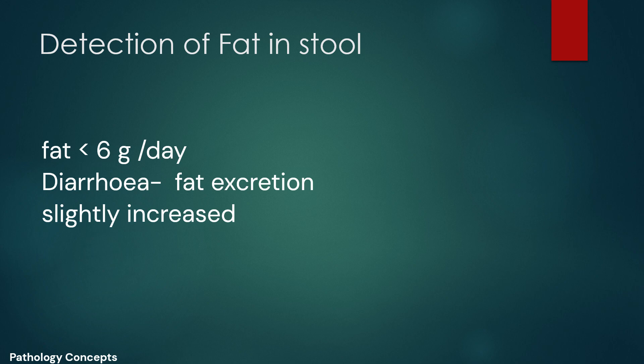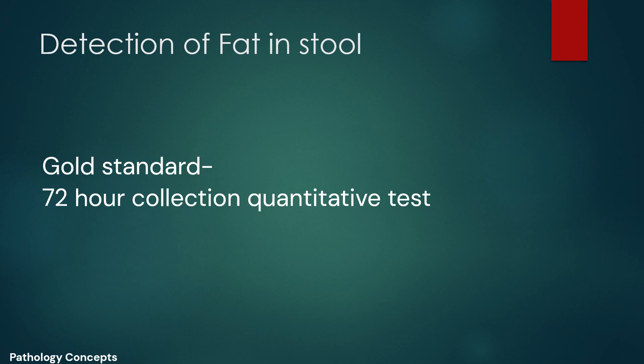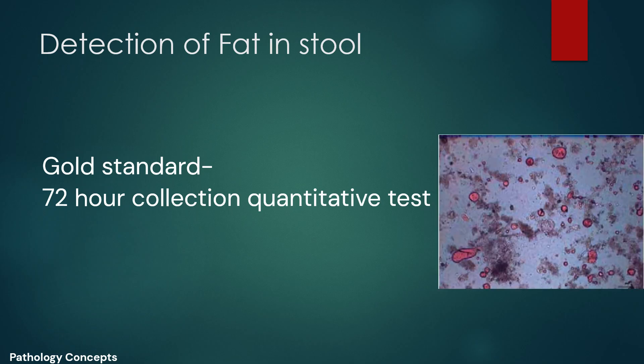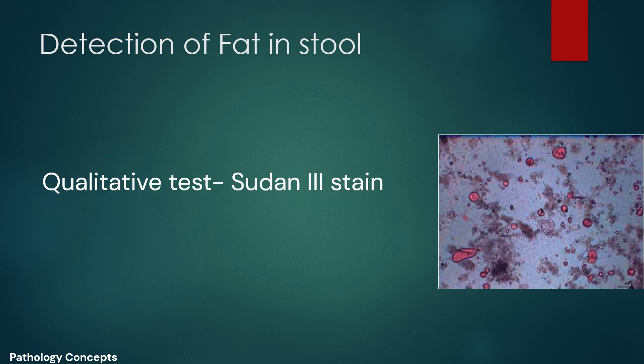Let's see the detection of fat in stool. In healthy humans, daily excretion of fat in stool is less than 6 grams, and this amount remains constant even if daily fat consumption is 100 to 125 grams. The excretion of fat in stool may moderately increase in absence of fat malabsorption in patients with diarrhea. The gold standard in diagnosis of steatorrhea is quantitative calculation of stool fat from 72-hour collection. The qualitative test including Sudan 3 stain continues to be used in clinical practice.